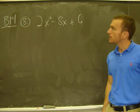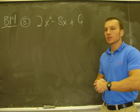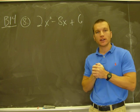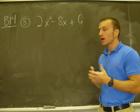Alright, B14, number 8, 2x squared minus 8x plus 6. The directions are the same, factor completely.